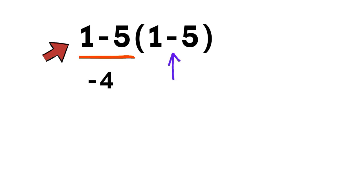1 minus 5 gives negative 4, and again inside the parentheses, we have 1 minus 5. So negative 4 times negative 4 gives positive 16. It feels correct, right?